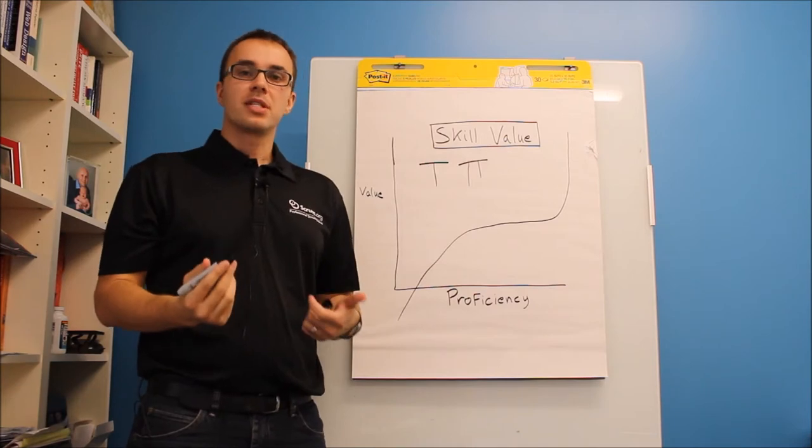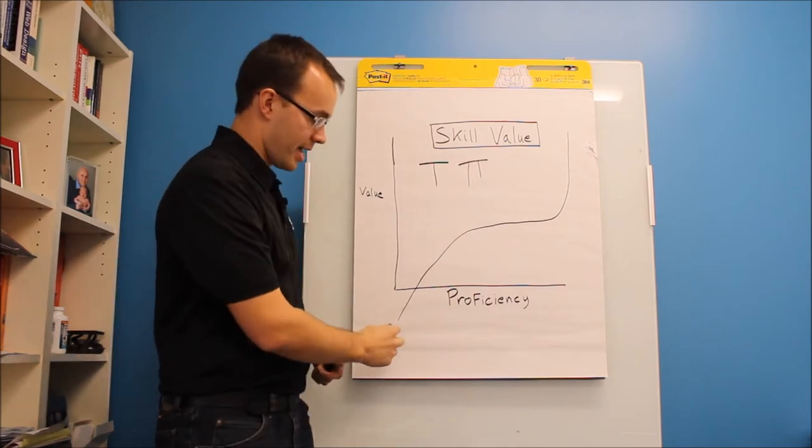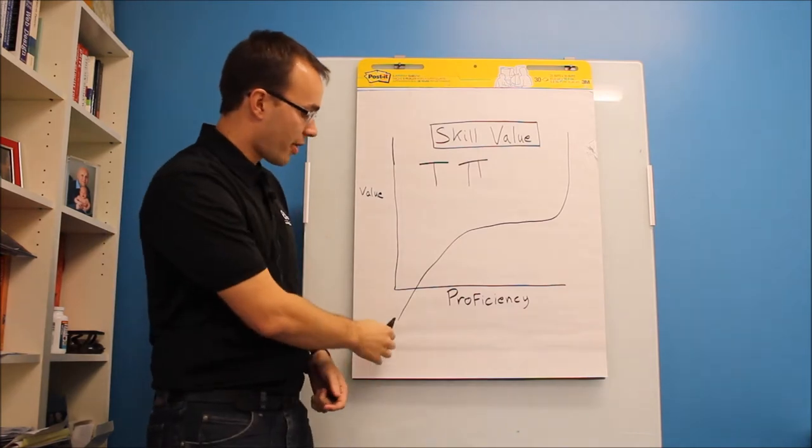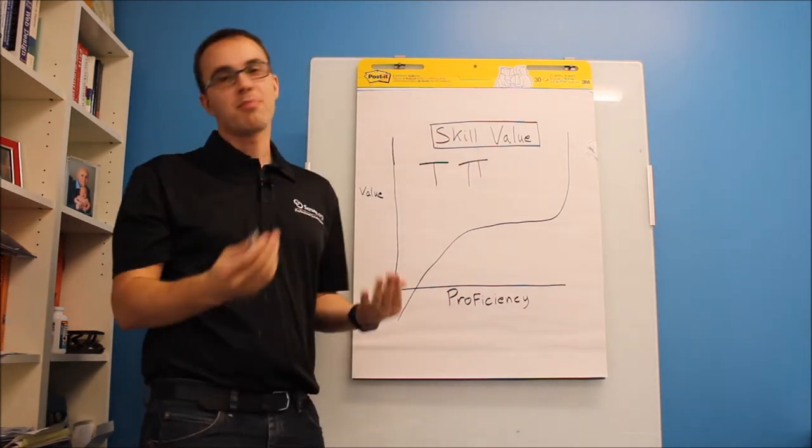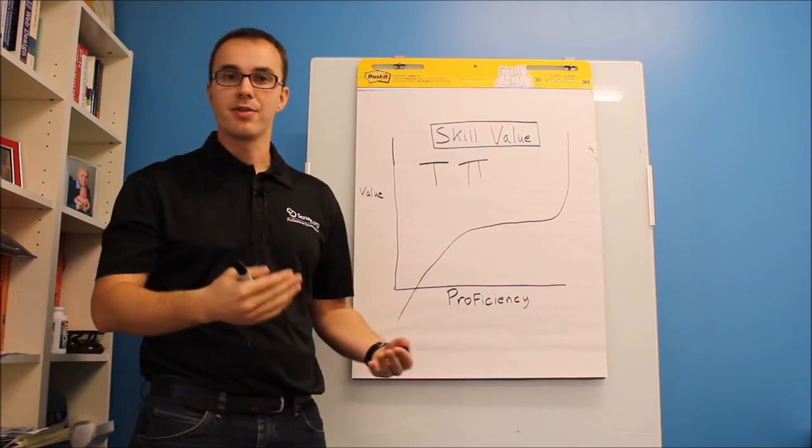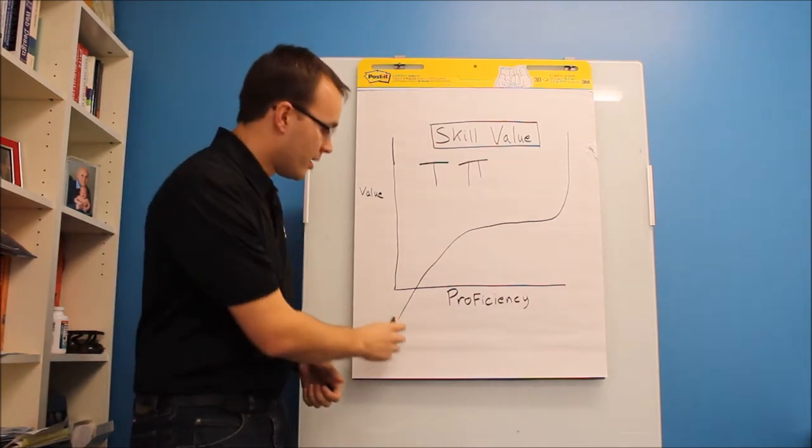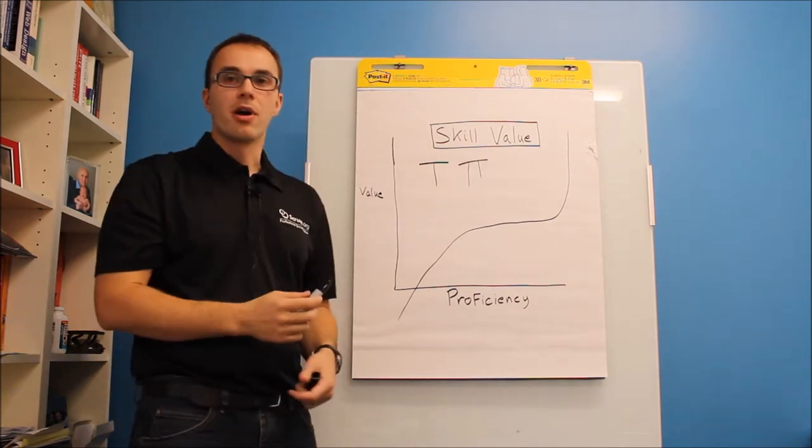So when I think of skills, any skill that someone has is on a proficiency spectrum. When you start off with a skill, you're probably not producing much value. You're probably having negative value because you're spending time learning it. You might make more mistakes than it's worth. So you're actually producing negative value to start with.